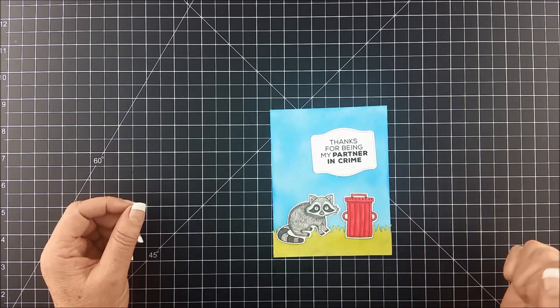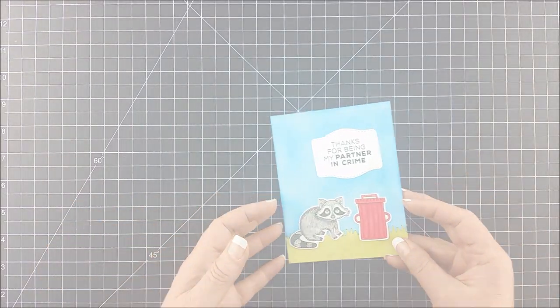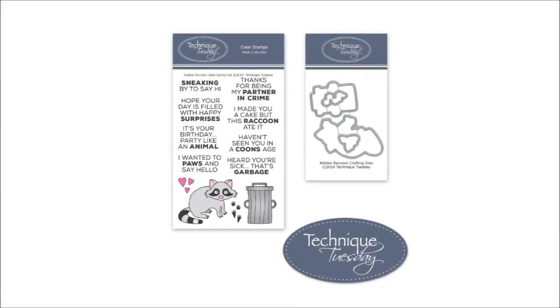I hope you enjoyed seeing this tutorial about how to make your raccoon look like it has fur. This technique of course will work for making fur on a lot of different creatures, including many of the animals in our Animal House collection. So if you like cute critters, I hope you'll check out that collection of stamps and dies. Thanks so much for watching.